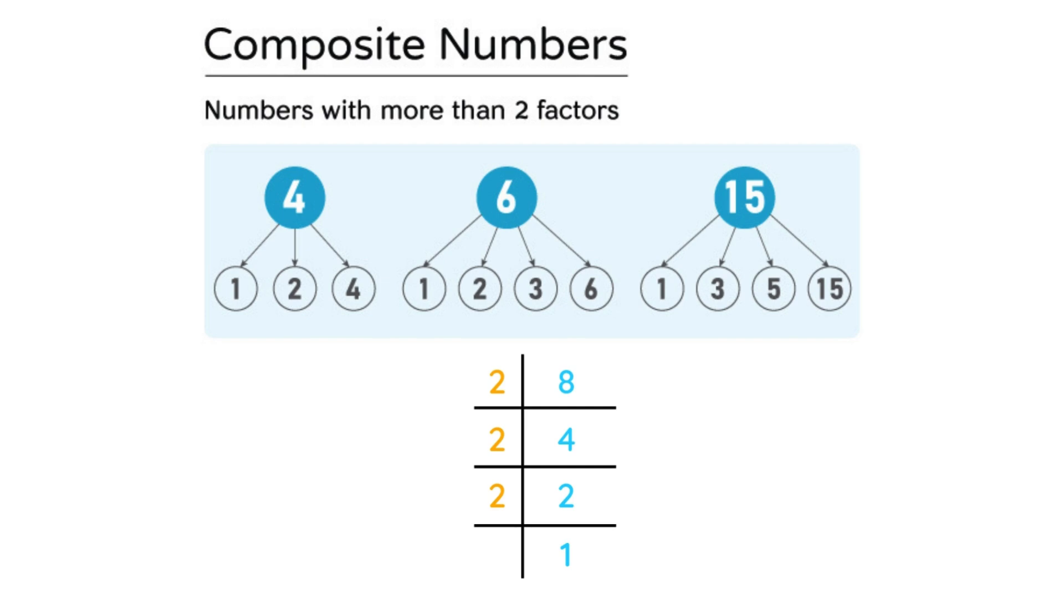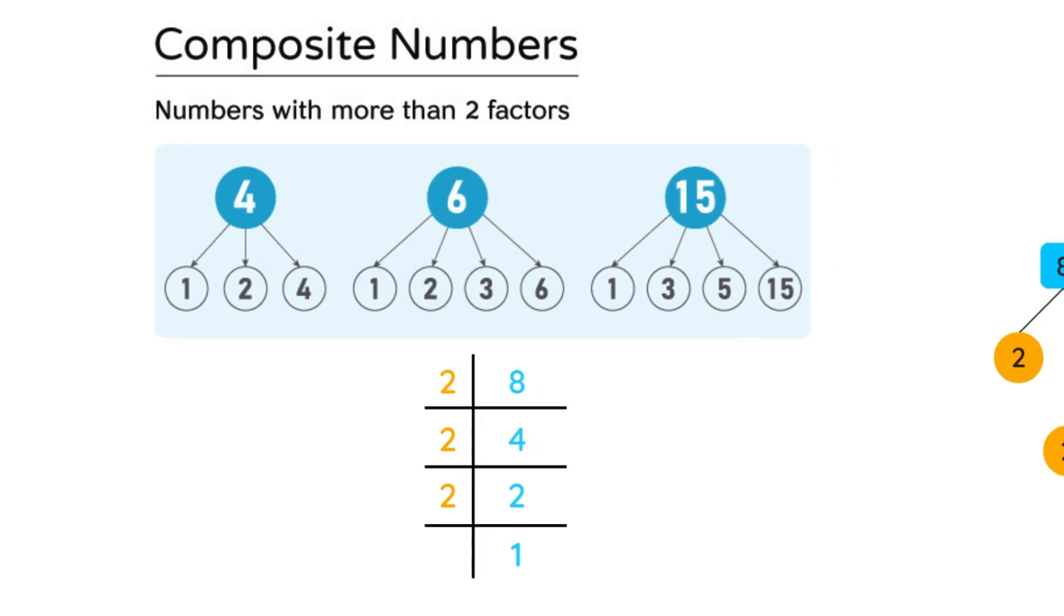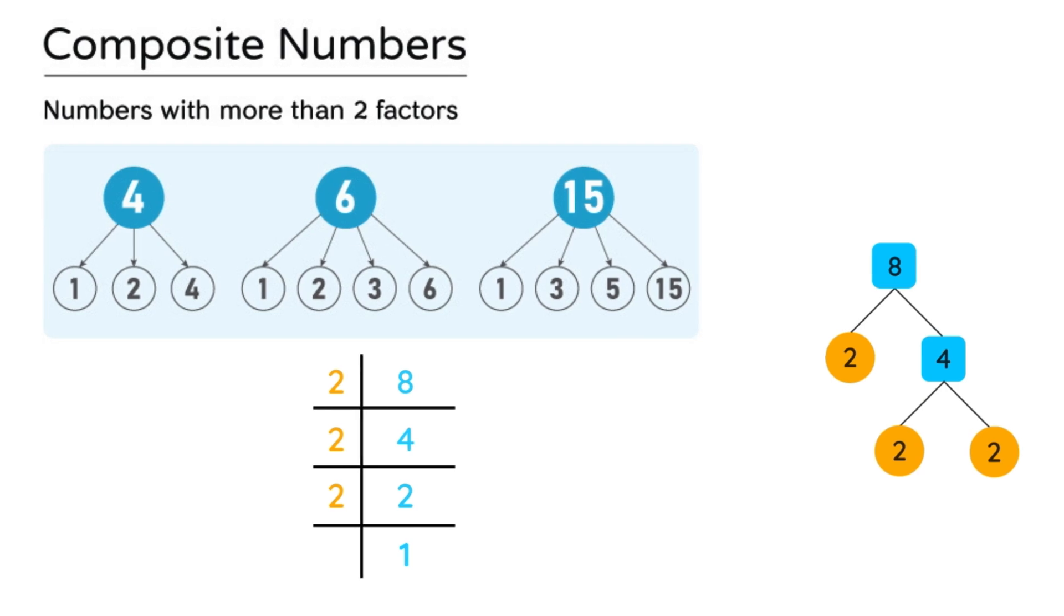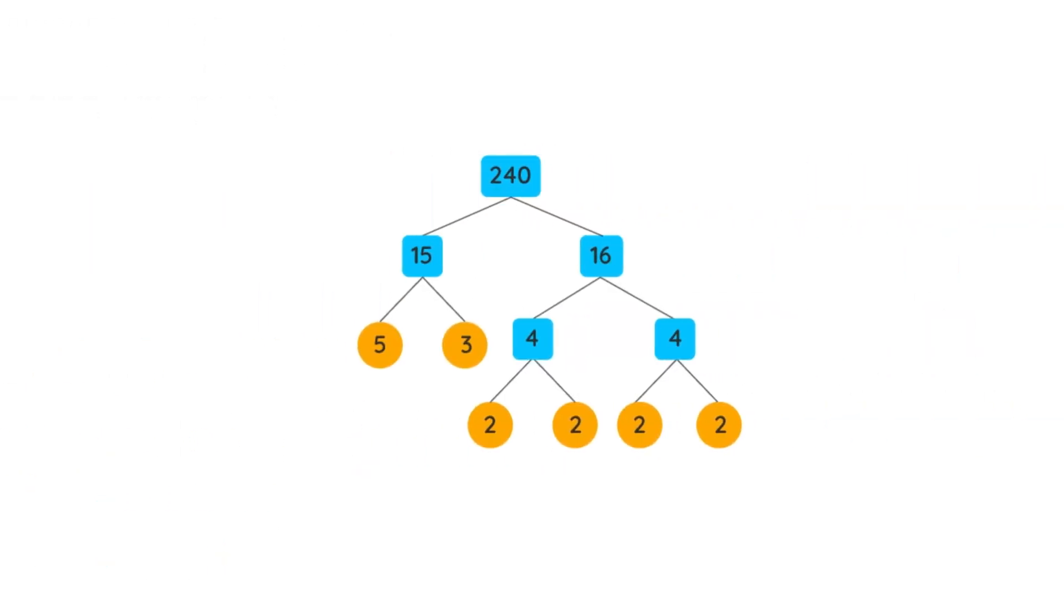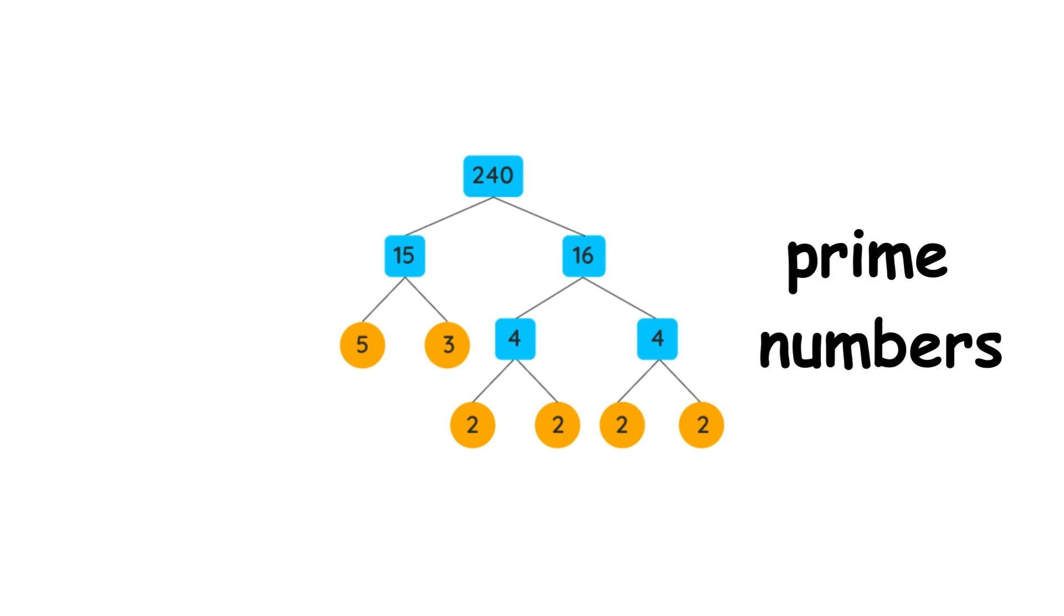A composite number can be composed from a product of prime numbers. 8 can be expressed as 2 times 2 times 2.